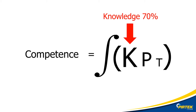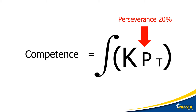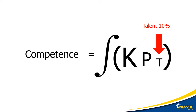Let's have a quick look at this formula — don't panic, we're not doing mathematics or algebra or calculus. I found this formula on the internet and it really demonstrates what it takes to be competent at something. Competence is 70% knowledge, 20% perseverance, and 10% talent. Knowledge is more important than talent. It's a common misconception that just because you're good at one thing, you're good at everything — this is called the halo effect.